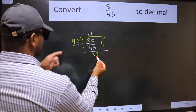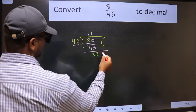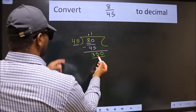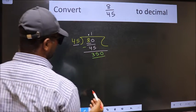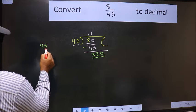35 is smaller than 45 and we already have the decimal, so directly take 0. So 350. A number close to 350 in 45 table is... Let us check with 8.